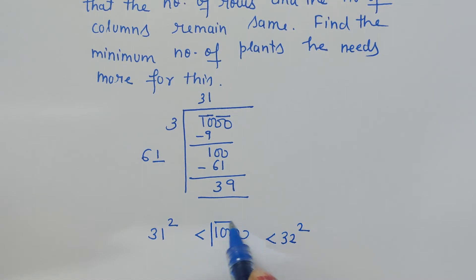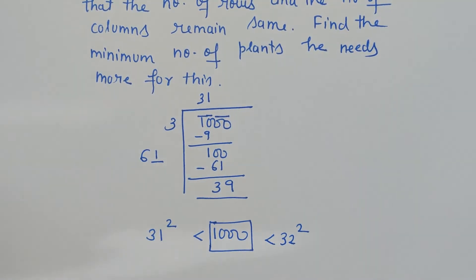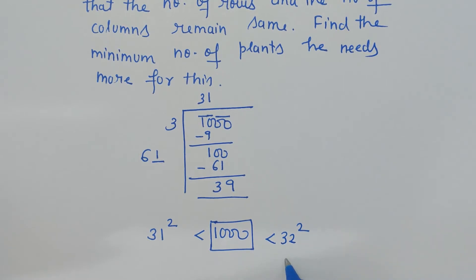The question is to make it a perfect square. So for making it a perfect square, how many more plants are required? We just have to calculate what is 32 square. So 32 square is 1024.